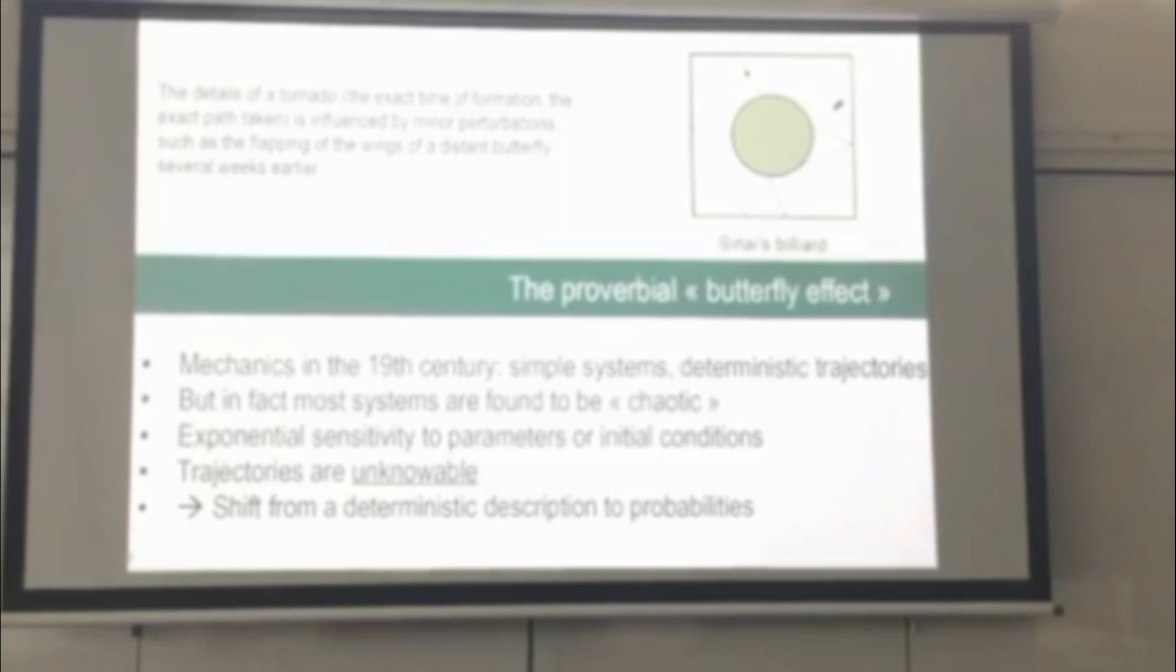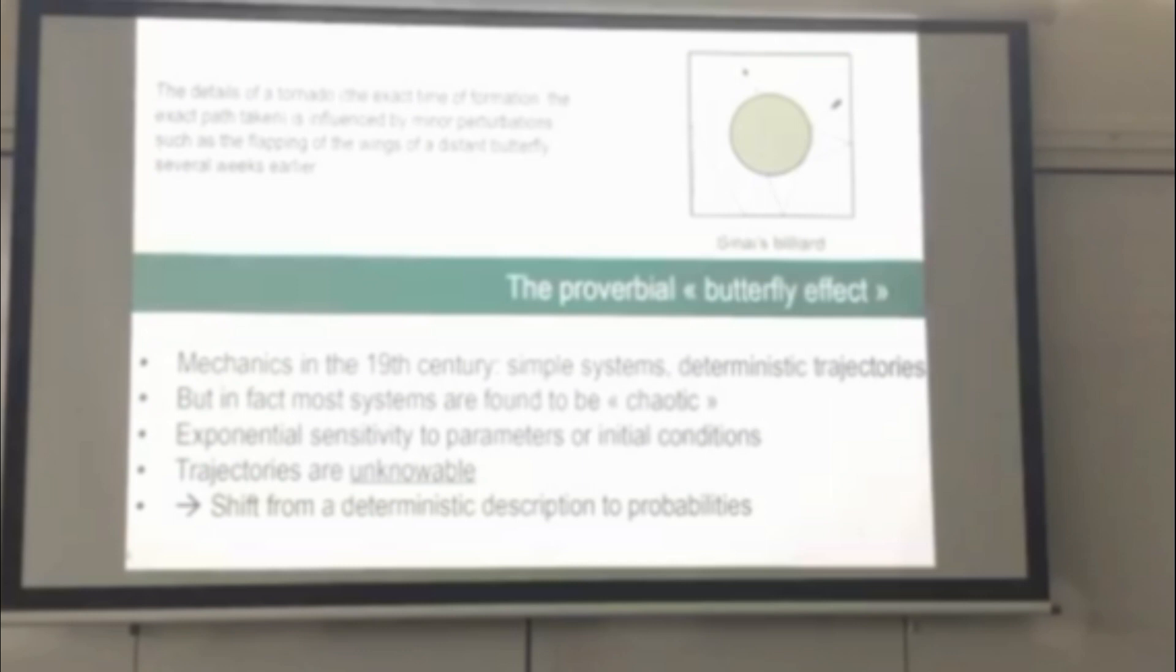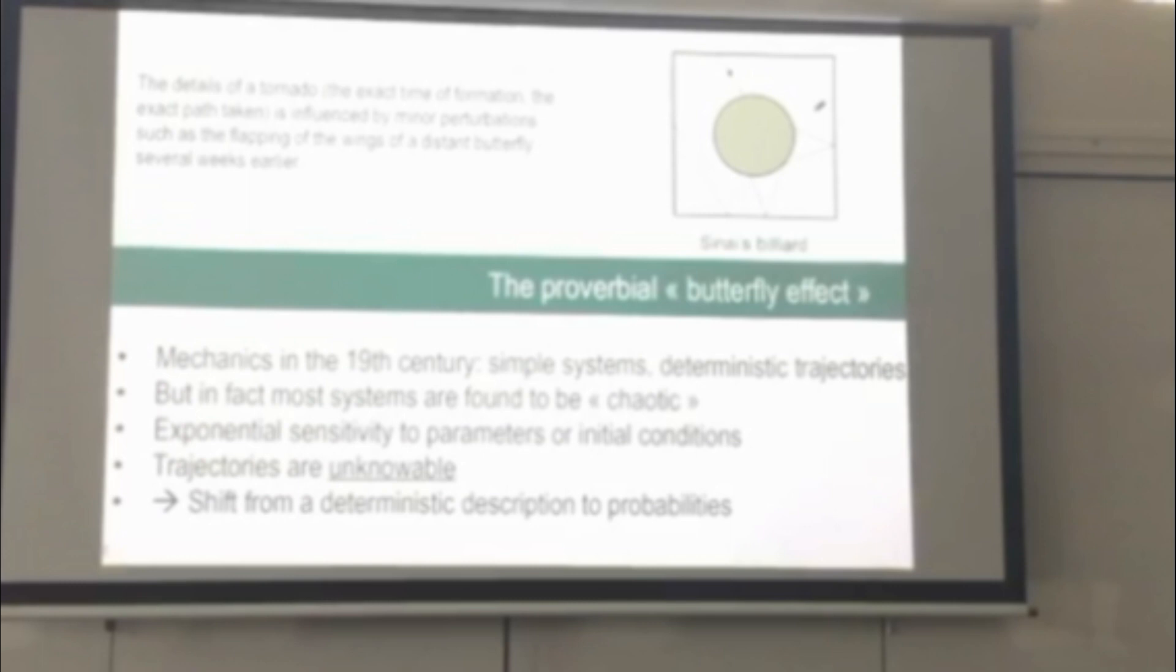You've heard about the proverbial butterfly effect, so I won't reiterate that. Mechanics in the 19th century, simple systems, deterministic trajectories. Exponential sensitivity to parameters or initial conditions. Trajectories are unknowable. A shift from a deterministic description to probabilities.